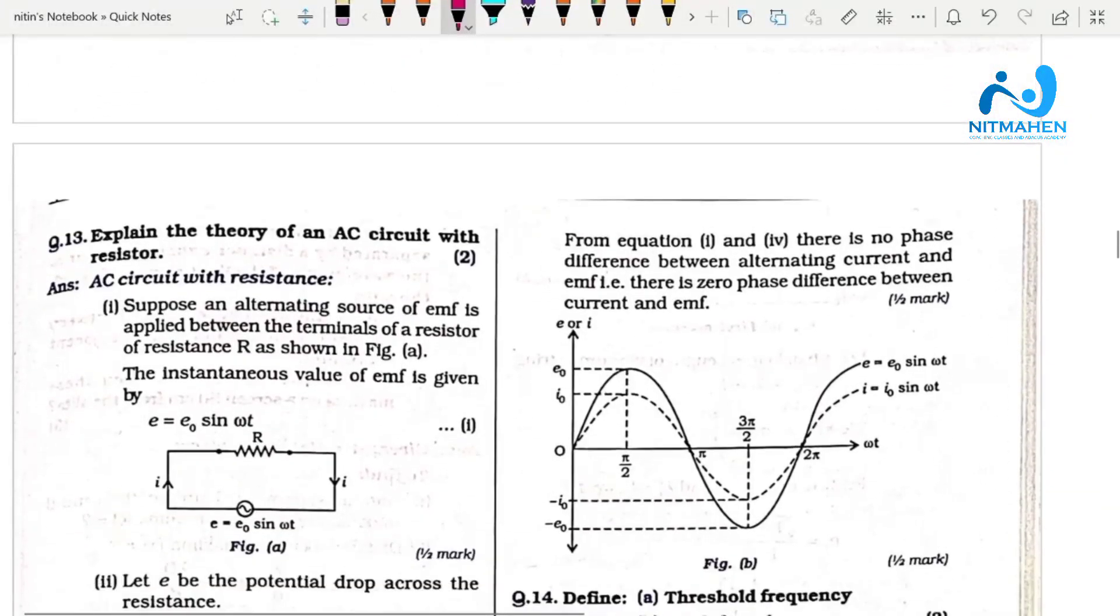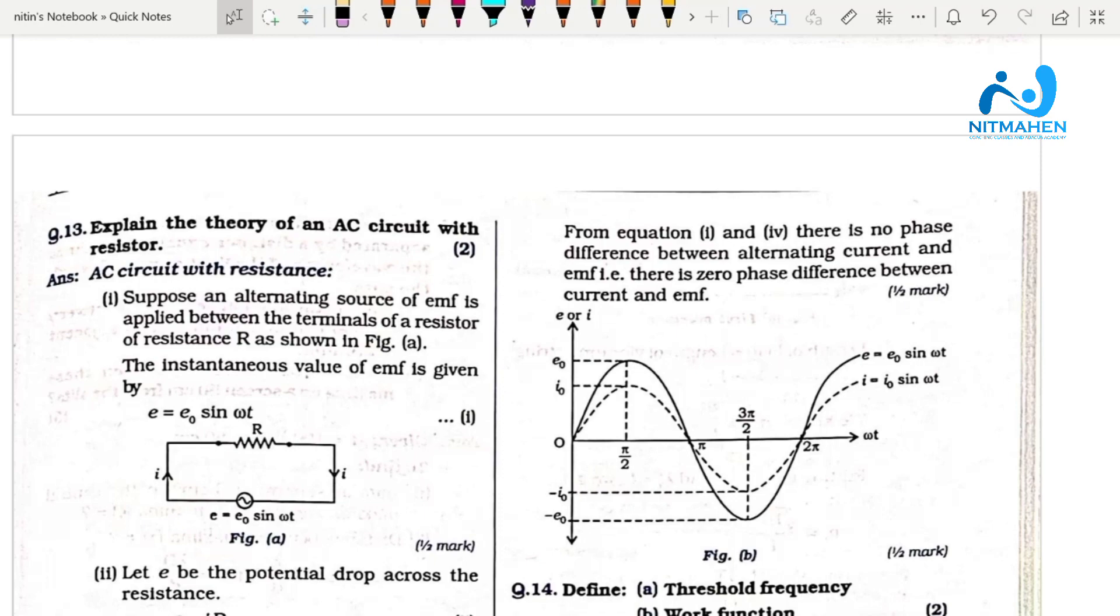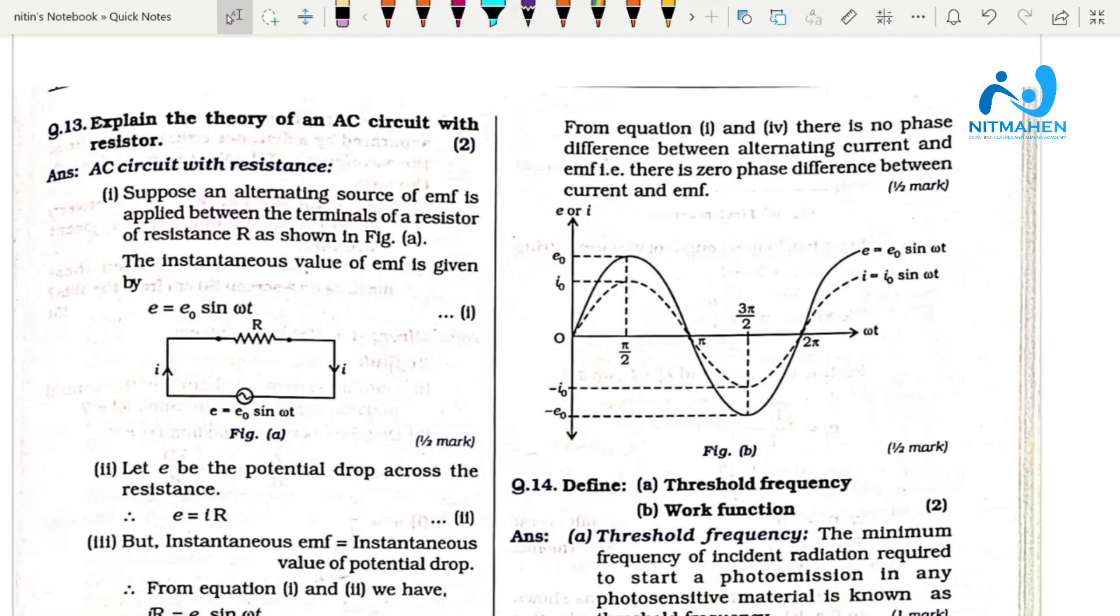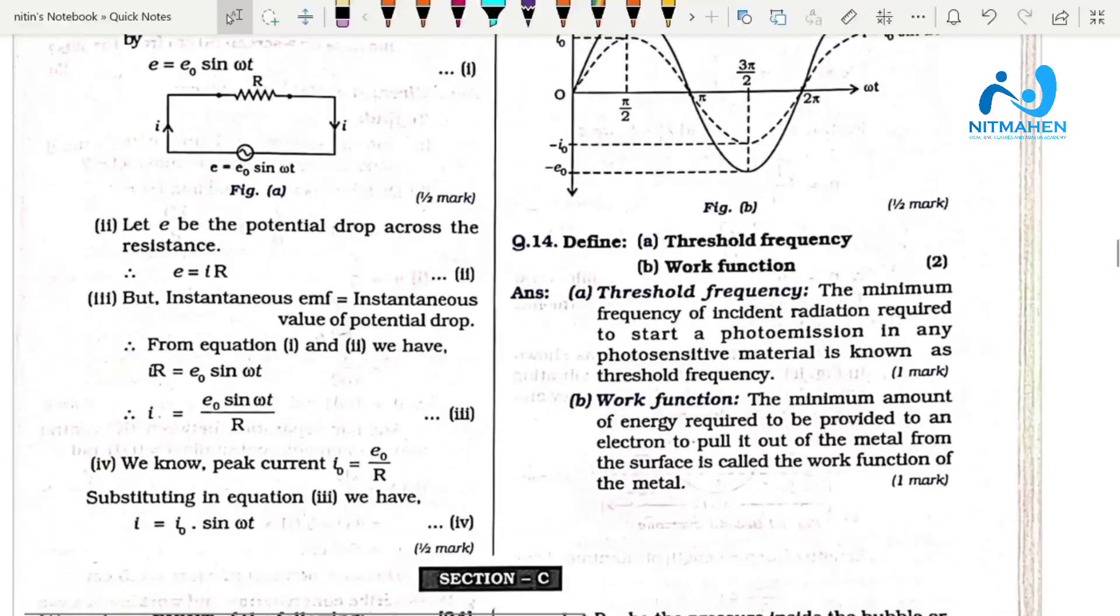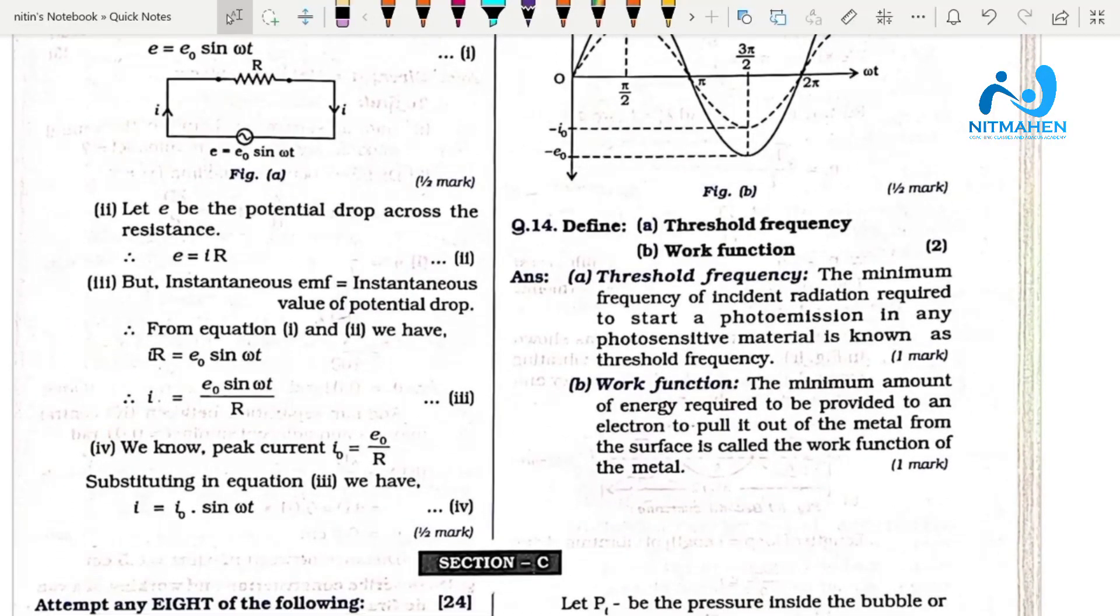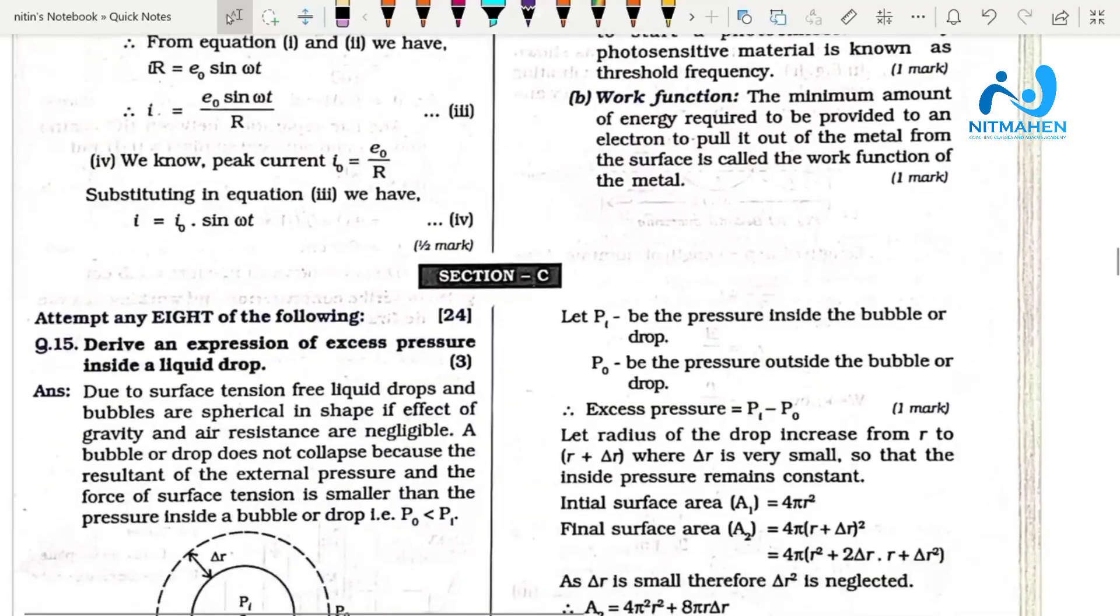Then explain theory of a circuit with resistor. Take these questions - one, two, three, four - these are the most important types. Question 14 is about actual frequency and work done. The work function is important in Section C.